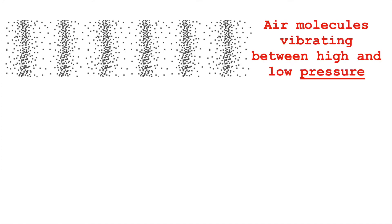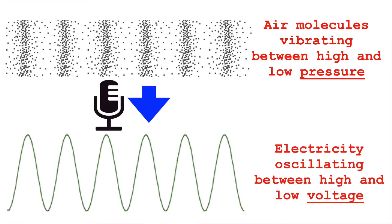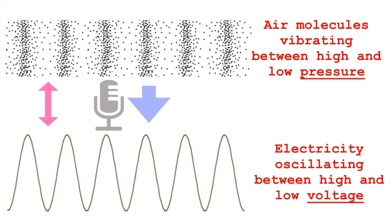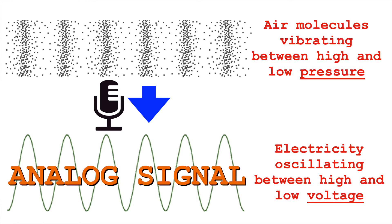In an environment, air molecules are vibrating. The microphone takes those high and low pressure fluctuations and converts them into analogous fluctuations in voltage. So when the air pressure gets high, the voltage gets high, and when the air pressure gets low, the voltage gets low. Since these changes in voltage are analogous to fluctuations in air pressure, we call this electrical signal an analog signal.